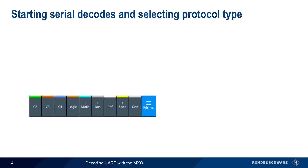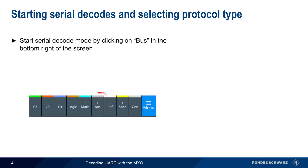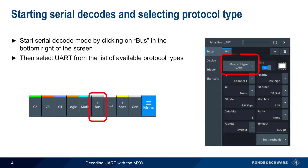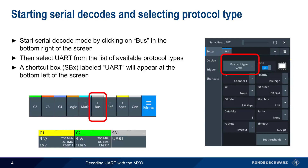The first step in decoding UART data with the MXO is to select BUS from the list of items in the bottom right corner of the screen. Then select UART from the list of available protocol types. This will also create a small box labeled UART in the signal bar near the bottom left corner of the screen, which can be used as a shortcut for configuring UART parameters.